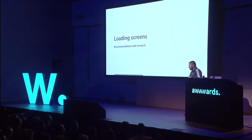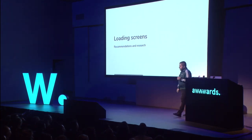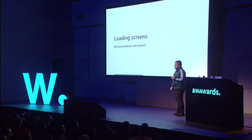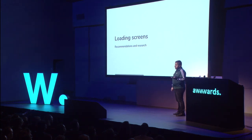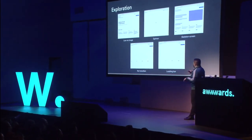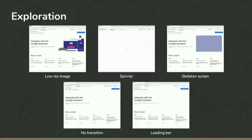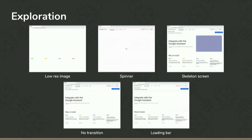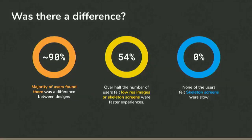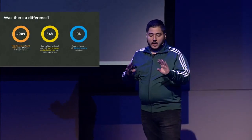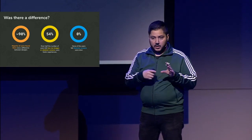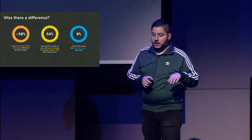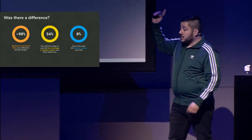Loading screens — I've done a lot of research on this. Late last year I did a study on our documentation sites to see how people perceive different loading approaches, because some argue there's no difference. There were five variations: loading a low-pixel image replacing with high quality, a spinner, a skeleton screen, no transitions, and a loading bar. We found that 90% of users do notice an actual difference. The majority prefer content placeholders — they find it makes the experience feel faster. The skeleton screen received no votes for being slow.